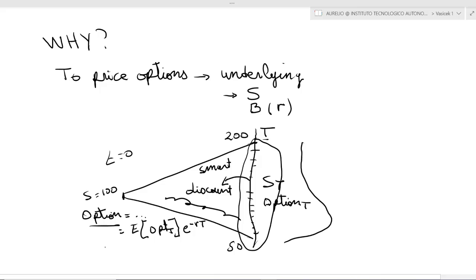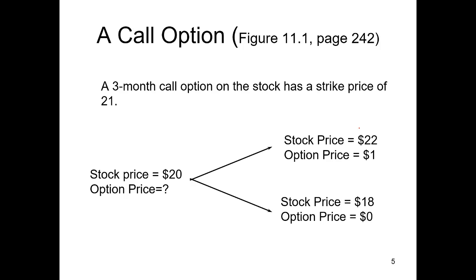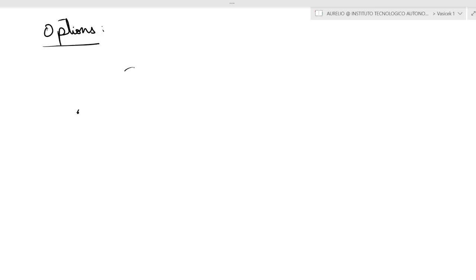Let's imagine a scenario where you have a stock price at t=0 equal to 20, and then three months later the price can go up to 22 or down to 18. We're going to have a call option. Options are basically two types: calls and puts.